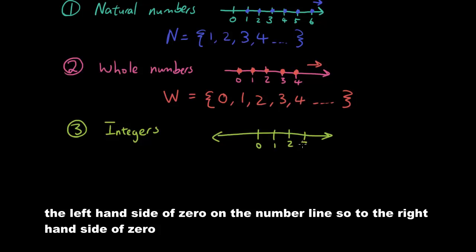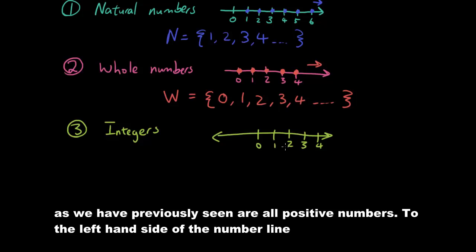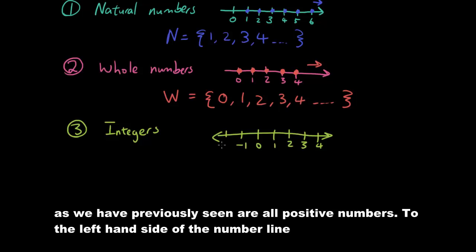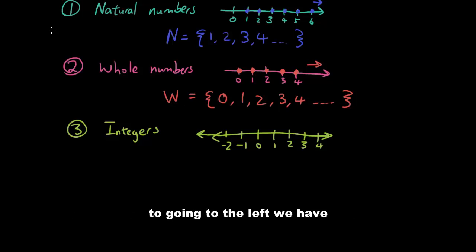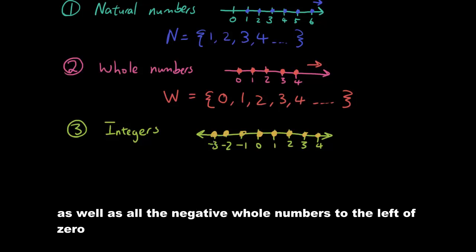But we also include the left-hand side of 0 on the number line. To the right-hand side of 0, as we have previously seen, are all positive numbers. To the left-hand side of the number line, to the left of 0, we have negative numbers. Going to the left we have negative 1, negative 2, negative 3 and so on. So integers include all the whole numbers as well as all the numbers to the left of 0.